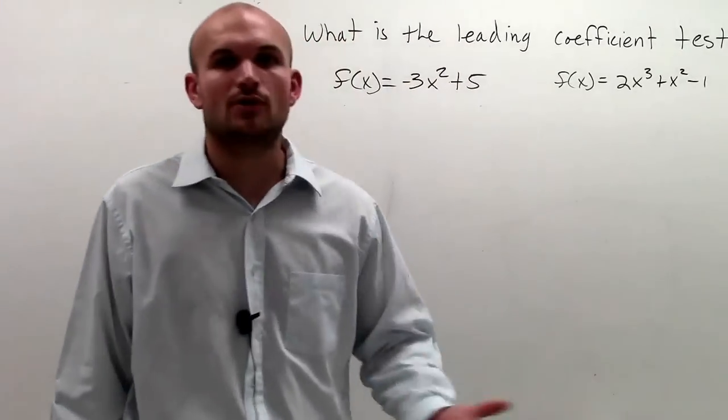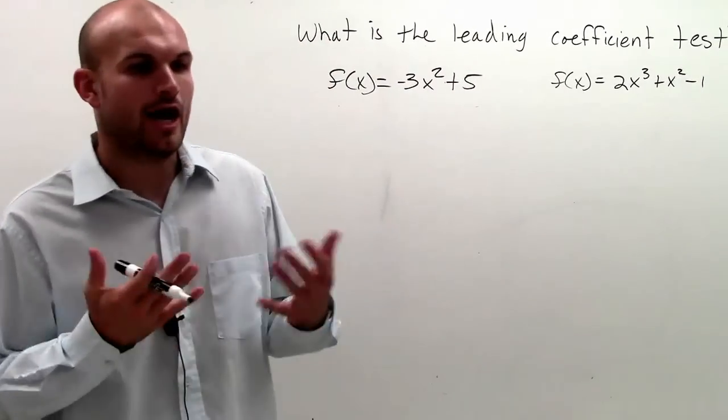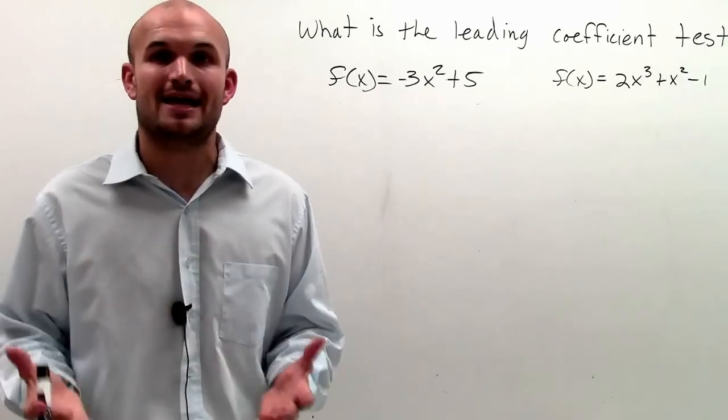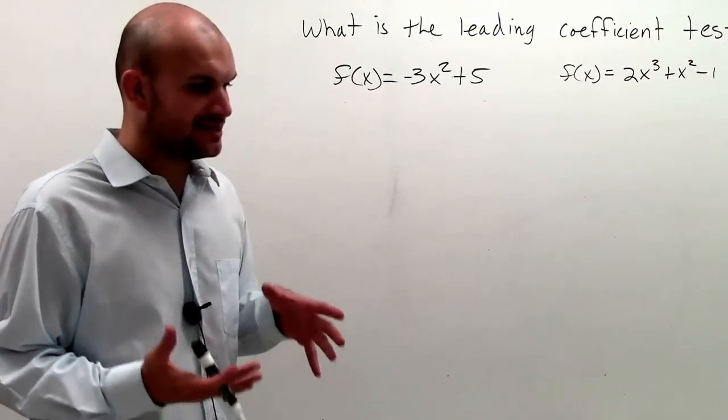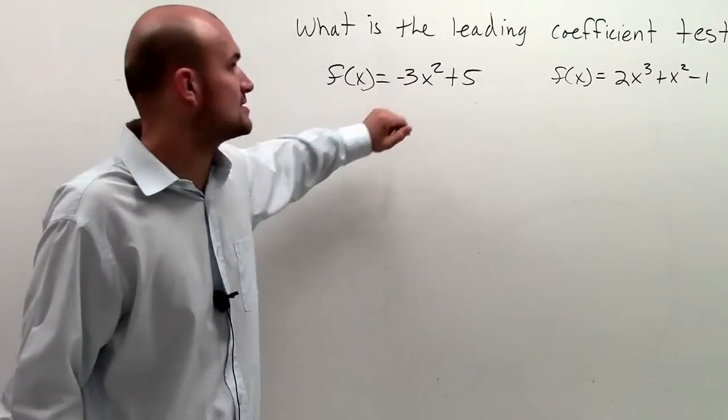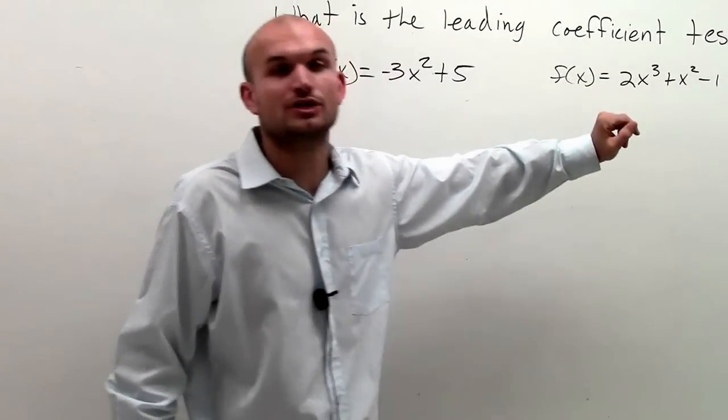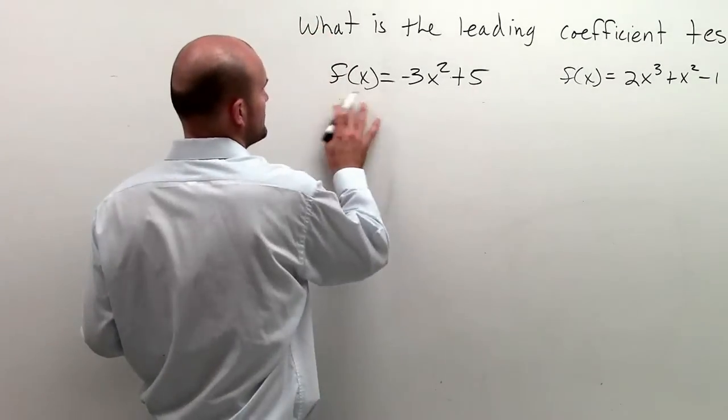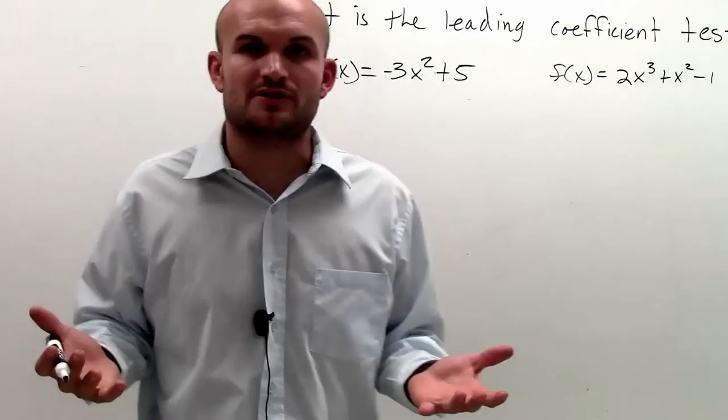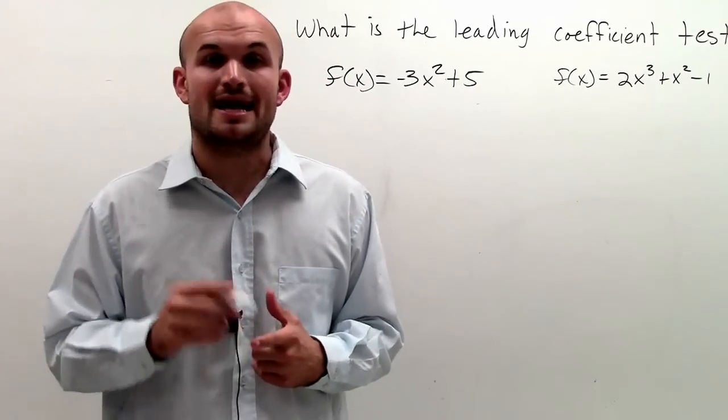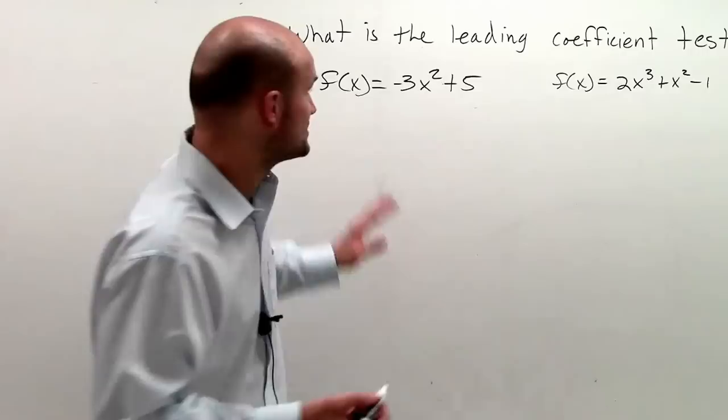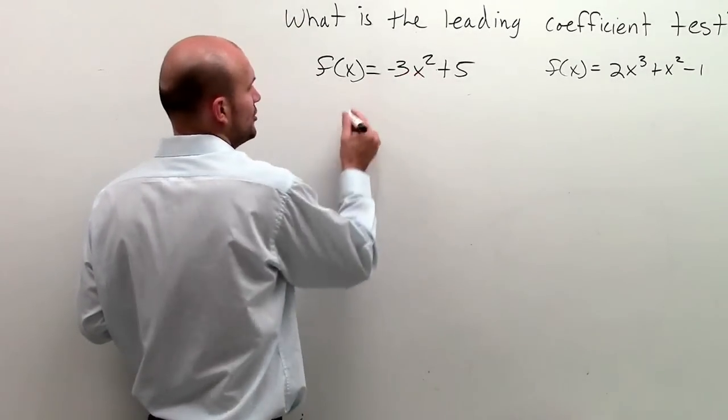What the leading coefficient tells us is it helps us determine the end behavior of our polynomial. And the way that it does that is by looking at our leading coefficient and also looking at the degree. So when trying to determine the leading coefficient test, it's helpful to first write out what the degree is and write out what the leading coefficient is for each polynomial.